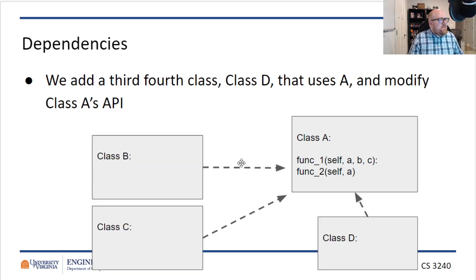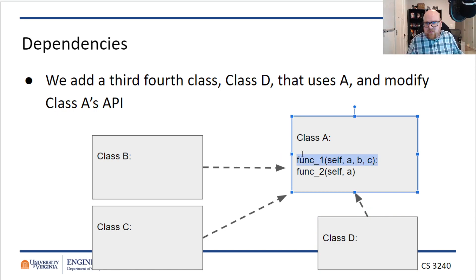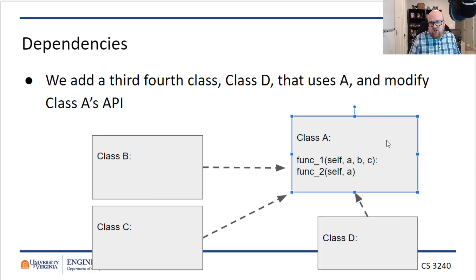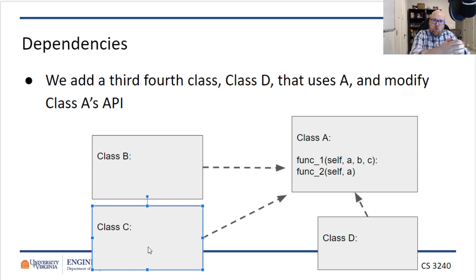Let's say that we add some fourth class, class D, which also uses class A. But because of some extra information class D needs, we need to modify the interface of class A — say, add a third argument to the func1 function. Well now, if B and C use this function, B and C have to be updated to include that extra argument. So by just adding class D and making one change to A, I potentially now have to change B and C. Like a still pond, if you drop a stone in it, the water ripples outward.